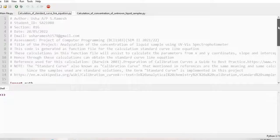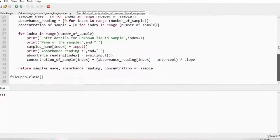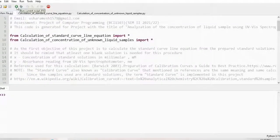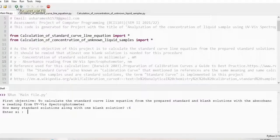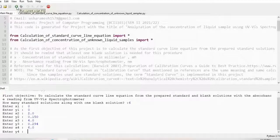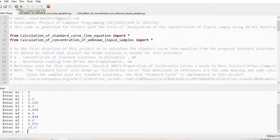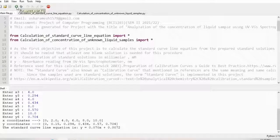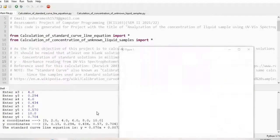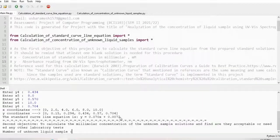So this is my second file which is the first function file and then this is my second function file. Through here we will get the graph of standard curve with the y equals to mx plus c, which is 0.070x plus 0.0072. So here this is how we got for the first objective.